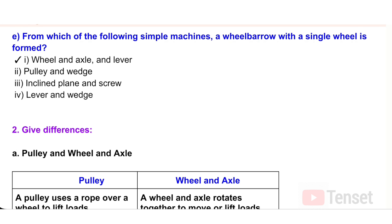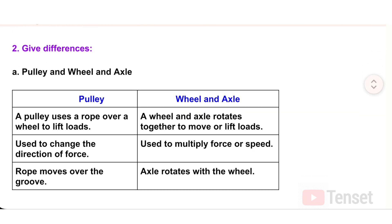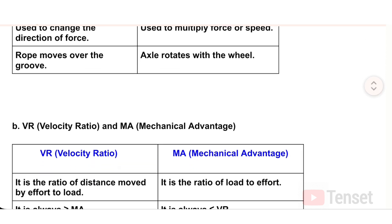Question 2: Give differences. A) Pulley vs. Wheel and Axle: A pulley uses a rope over a wheel to lift loads, while a wheel and axle rotate together to move or lift loads. A pulley is used to change the direction of force; a wheel and axle is used to multiply force or speed. In a pulley, the rope moves over a groove; in a wheel and axle, the axle rotates with the wheel.